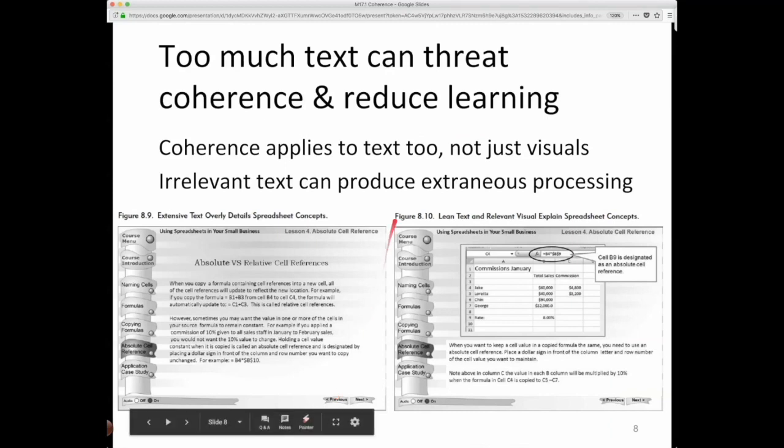Coherence is also relevant to text. Too much text can be a threat to coherence and reduce learning. So here's an example of overly detailed text on spreadsheet concepts, whereas here's a more efficient and to the point, more relevant and lean text that produces better learning. So think about coherence, not just with respect to images, but also with respect to text.